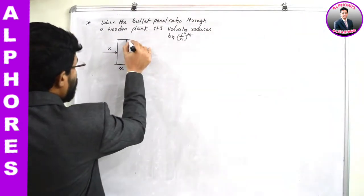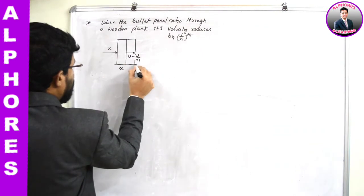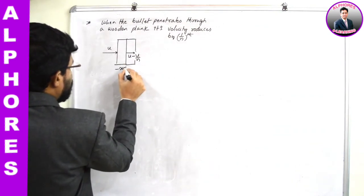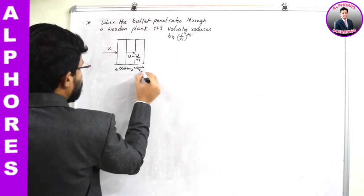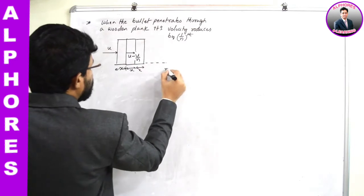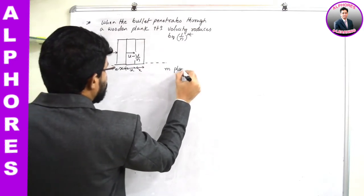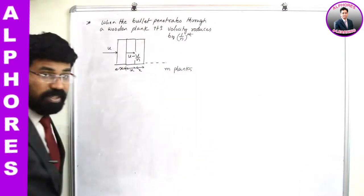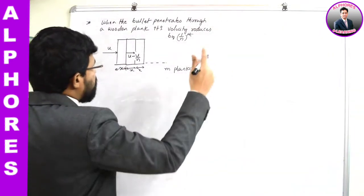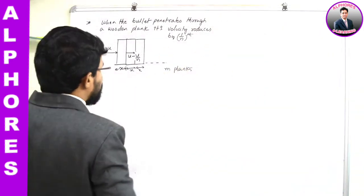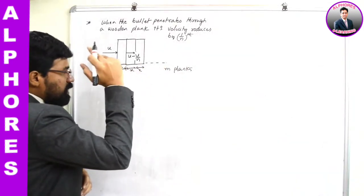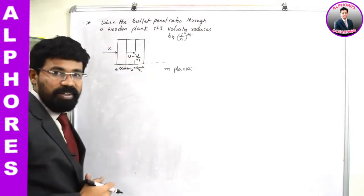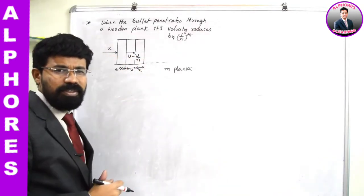I am going to arrange multiple planks. Let this pile have m planks, each of thickness x, so the total thickness is mx. If a bullet penetrates through all these planks and comes to rest in the mth plank, the total distance covered by the bullet is mx.